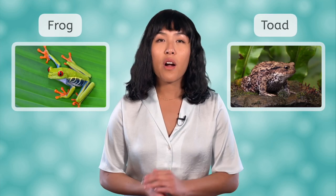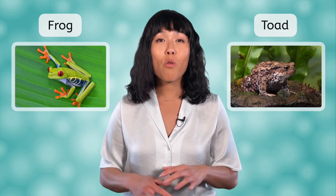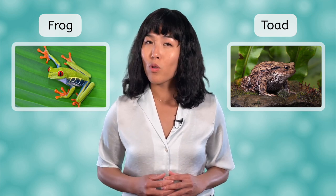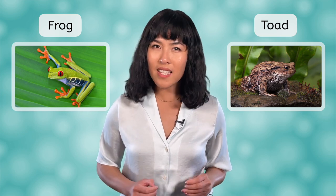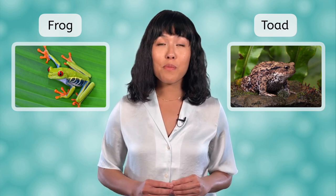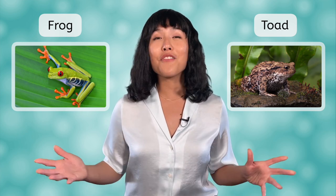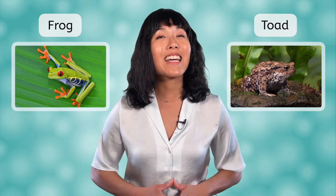Frogs and toads are often used interchangeably in common language, but there are actually some big differences between them. The main differences are in their skin and where they live. Frogs have smooth skin and spend more time in water, while toads have thicker skin and spend more time on land. So next time you see a warty, thick-skinned amphibian at the park, you can confidently identify it as a toad.